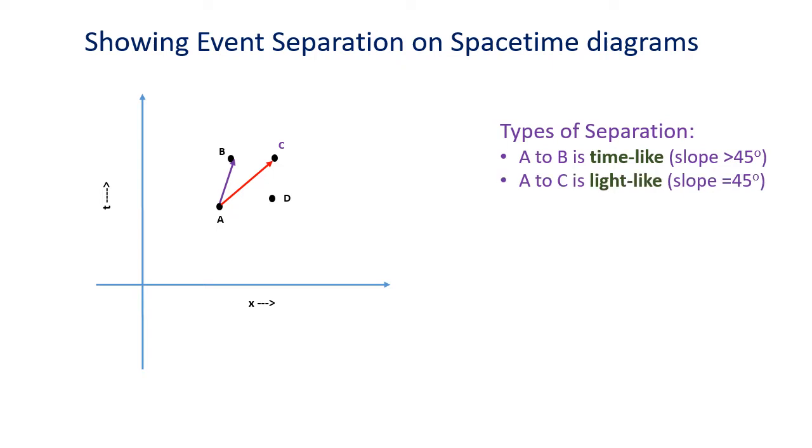Light-like, the slope of the line is exactly 45 degrees. It's possible for light to get between the two events, but no material particle can.